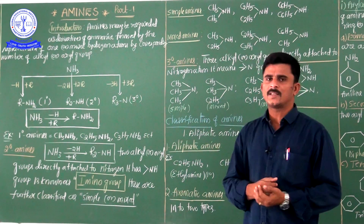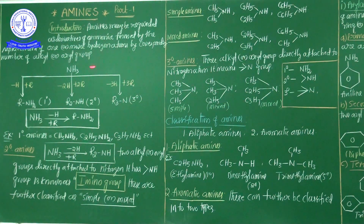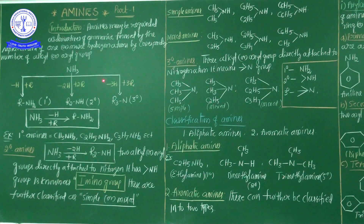Today we are going to discuss the amine chapter — a new chapter from organic chemistry called 'Organic Compounds Containing Nitrogen.' There are four parts: part one, amines; part two, isocyanides and cyanides; part three, diazonium salts; part four, nitro compounds. In CBSE 12th standard, amines and diazonium salts are very, very important. We will now start part one: amines.